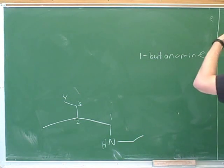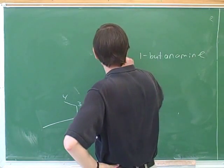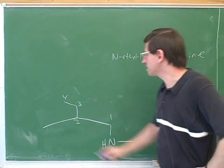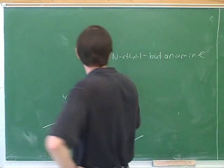Alright, then we have some substituents. Well, over here we have an ethyl substituent. So that would be N-ethyl. And over here, since we decided this was not the parent chain, this is a substituent as well. This is a methyl.